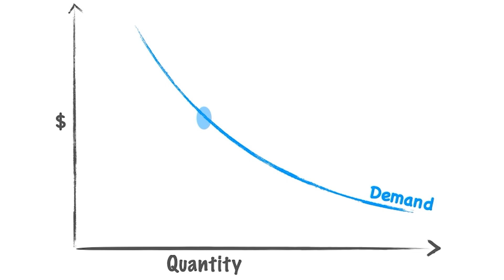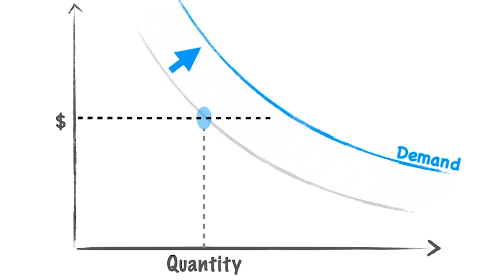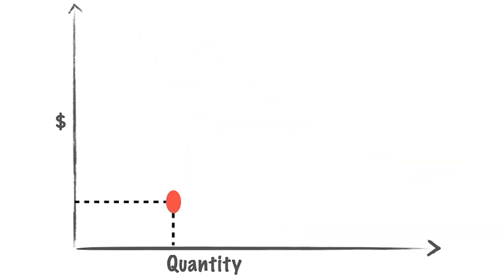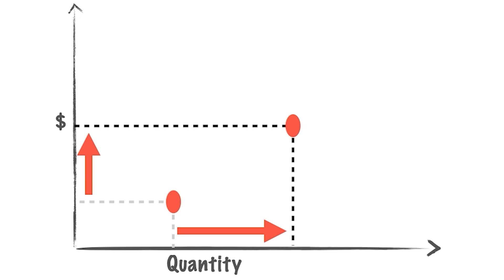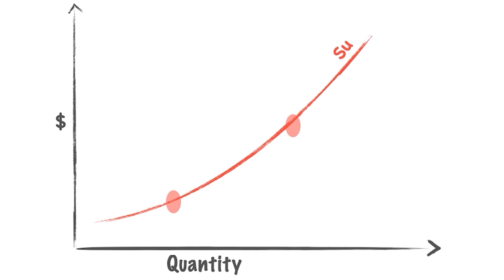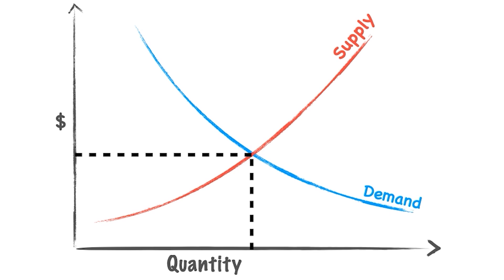And if that product suddenly becomes more popular, then the demand will increase, and at the new demand, a higher quantity will be purchased for each price point. It's also true that the cost of producing a product — which is the minimum amount that a supplier can reasonably sell it for — is dependent on the quantity that gets produced. Once economies of scale have been exhausted, the marginal cost of production goes up with the quantity produced, and this is called the supply curve.